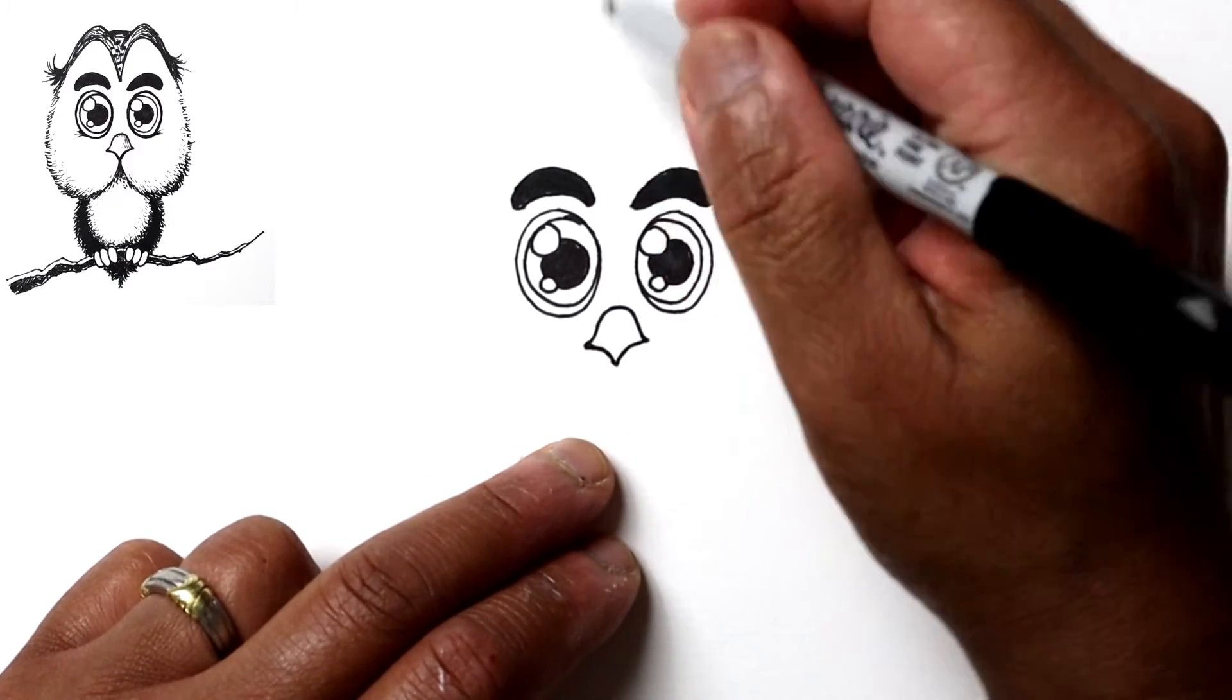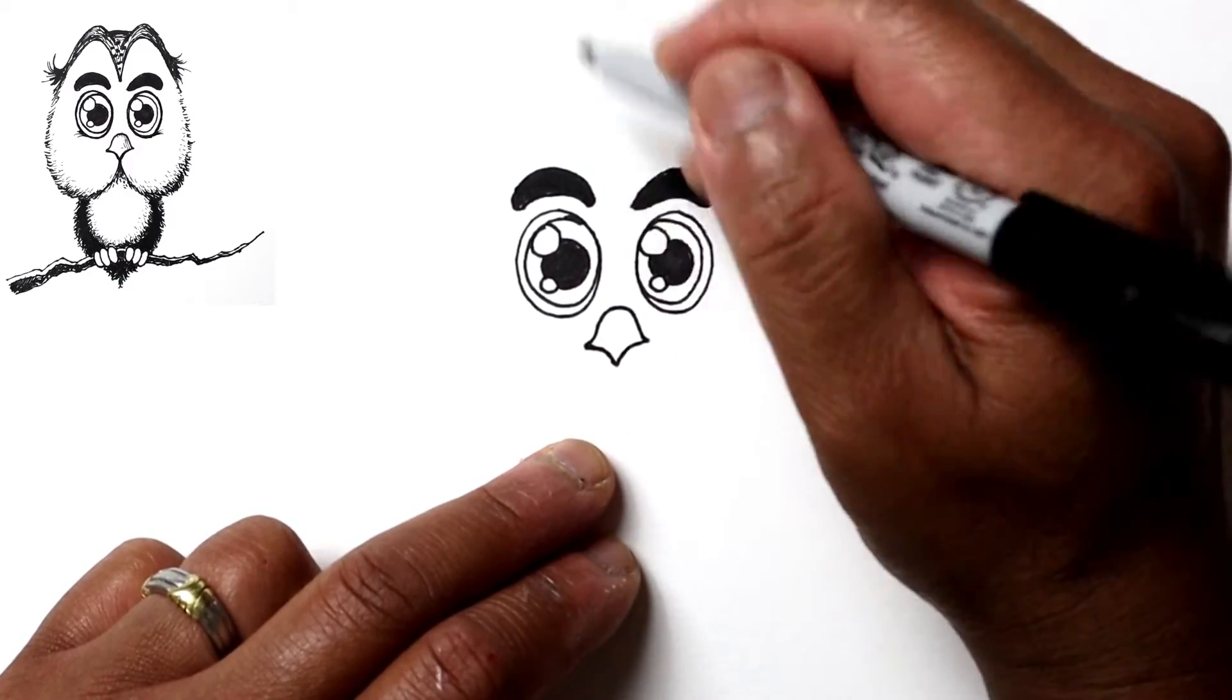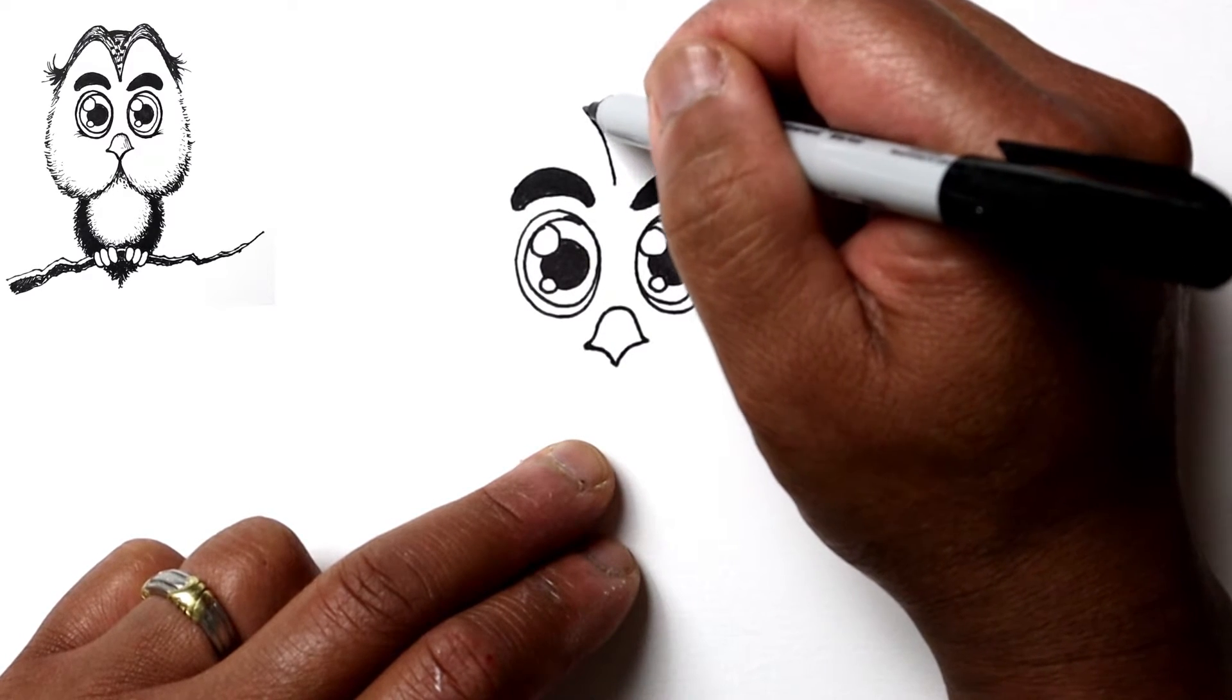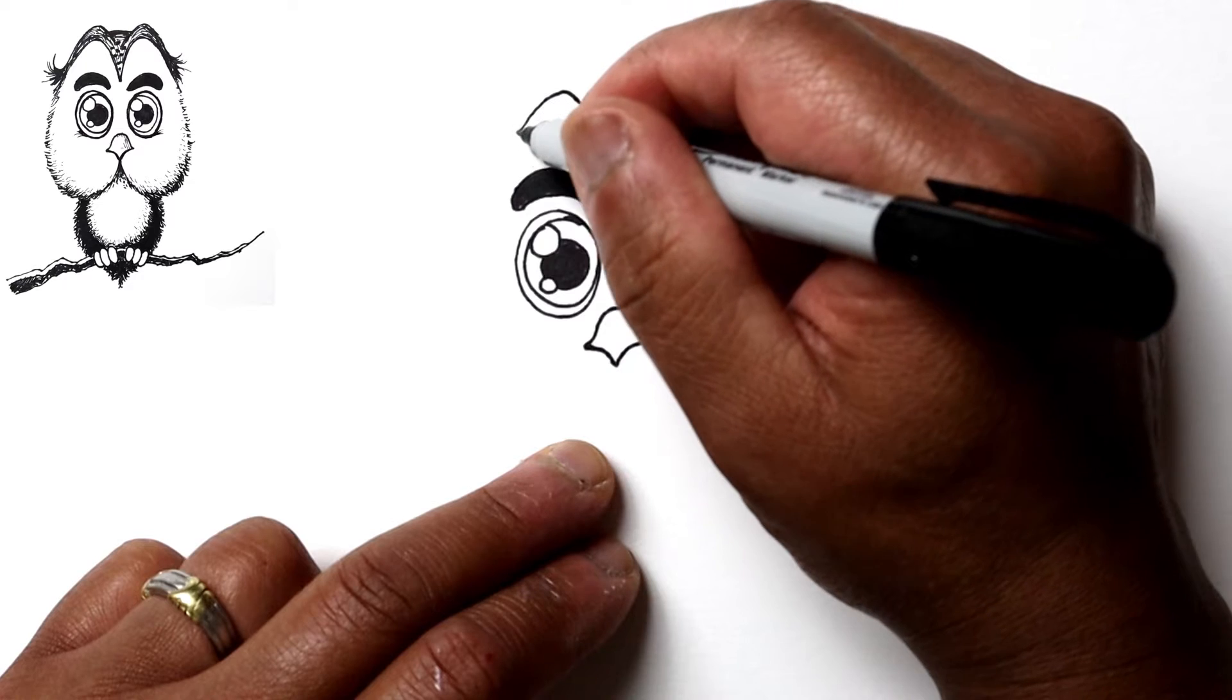So next let's draw the shape of the head. From here we're going to go up on either side, so it's going above each eye.